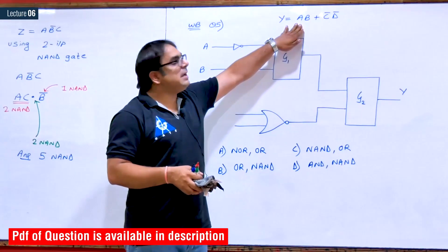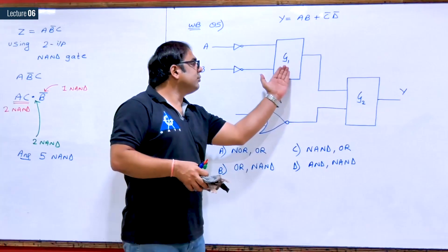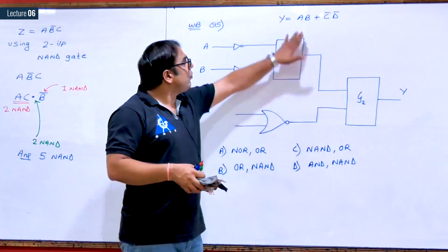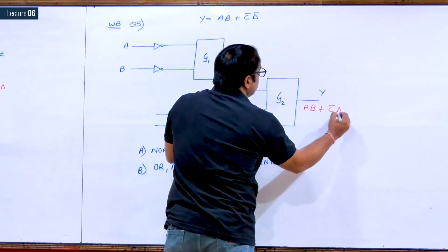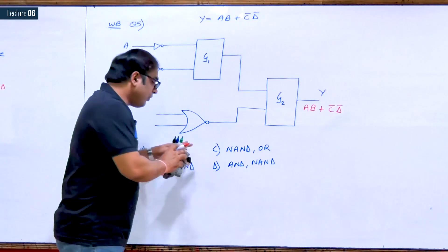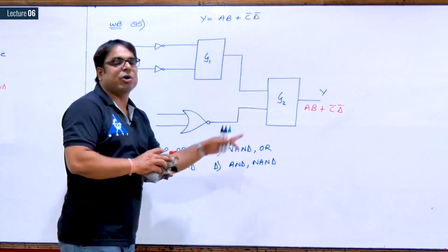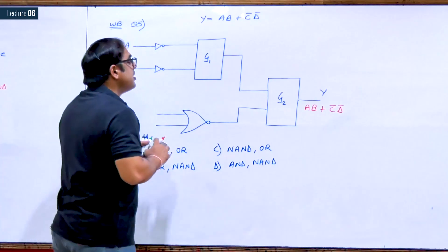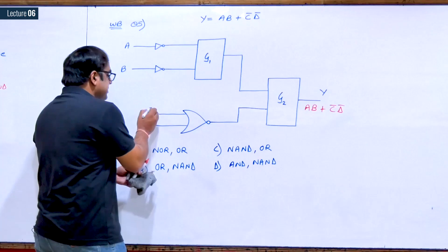Question five: we have to design AB + C'D' using the given structure with gates G1 and G2, and find which gates they are. The expected output expression is AB + C'D'. The inputs to one gate are C and D, and its output feeds into G2 along with the output of G1 whose inputs are A and B.